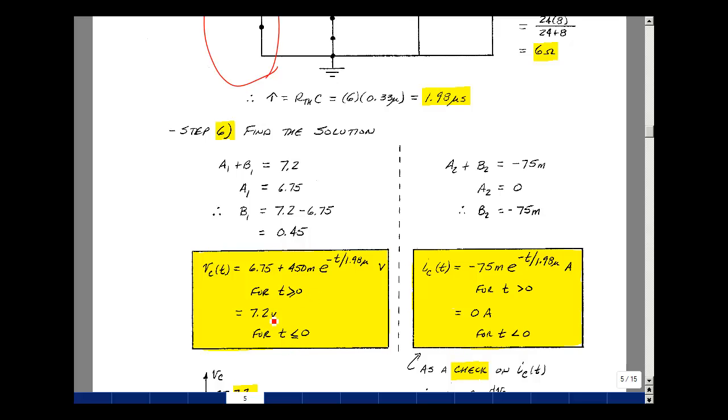For the capacitor current, we had that a2 plus b2 was minus 75 milliamps. a2 was zero, so b2 is minus 75. So the capacitor current is a2 plus b2 e to the minus t over tau, so minus 75 milli e to the minus t over 1.98 microseconds, amps.